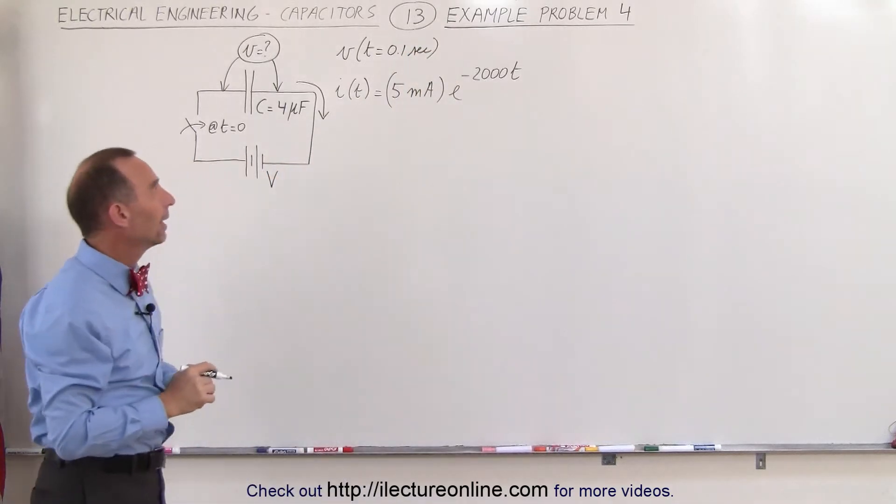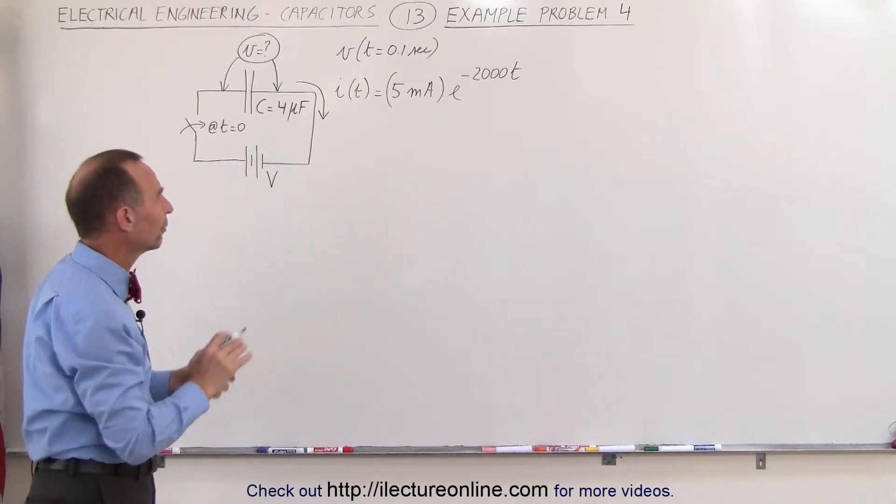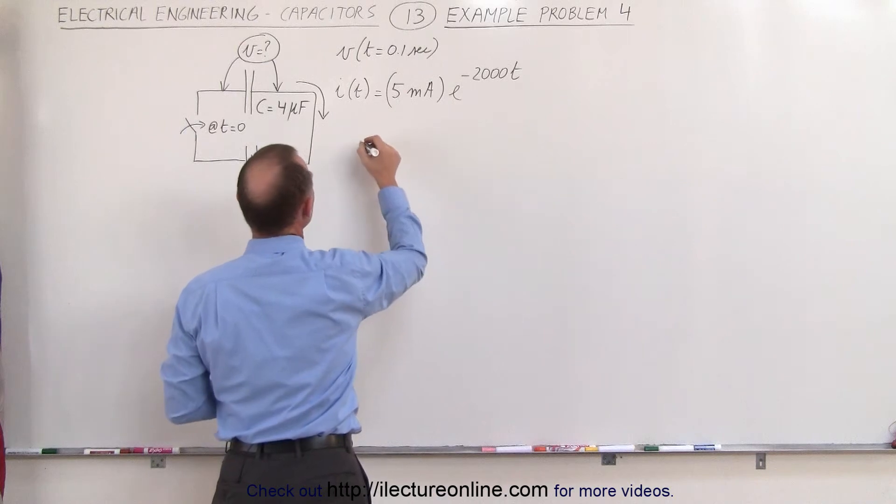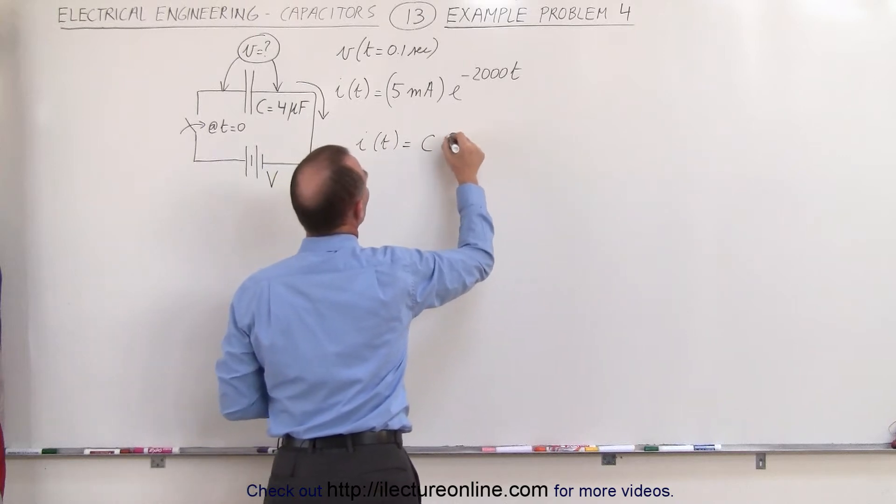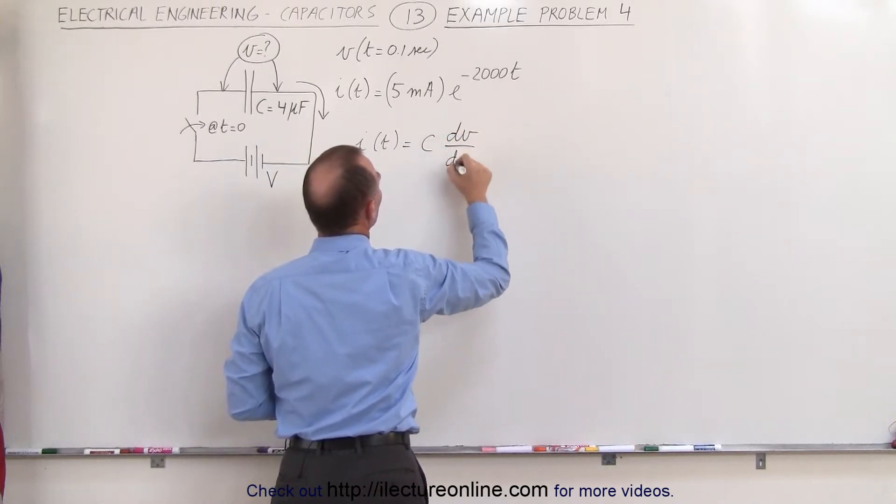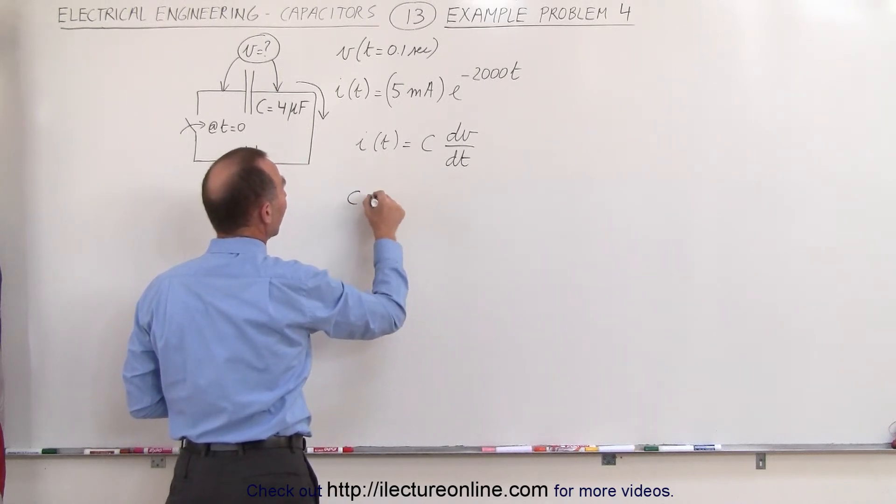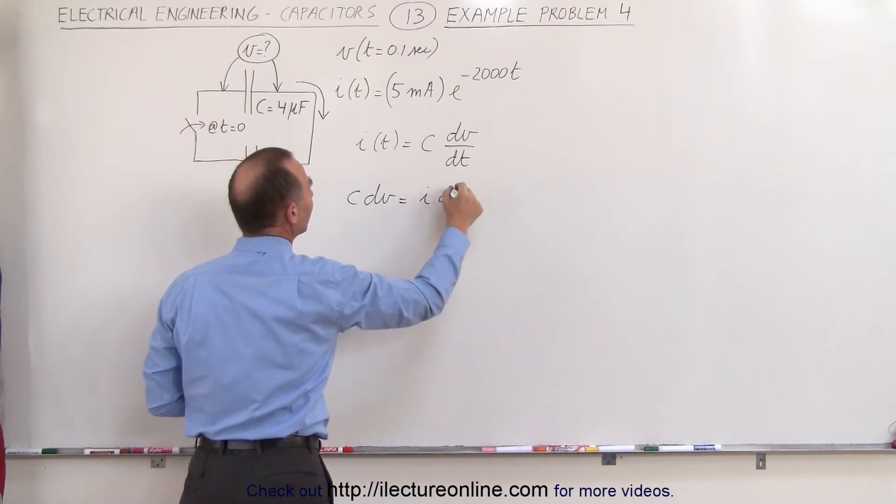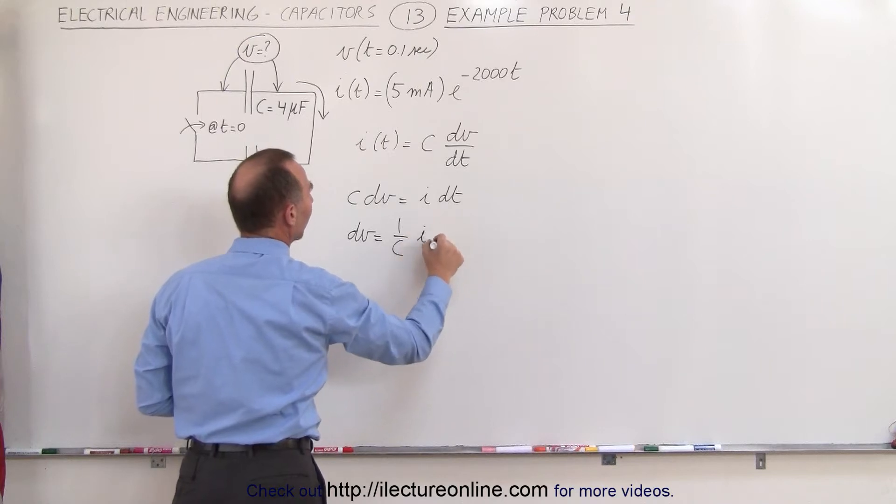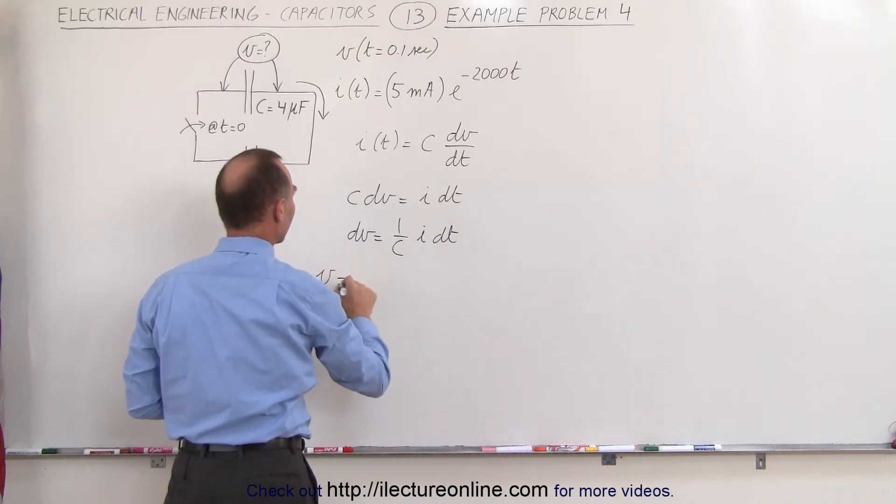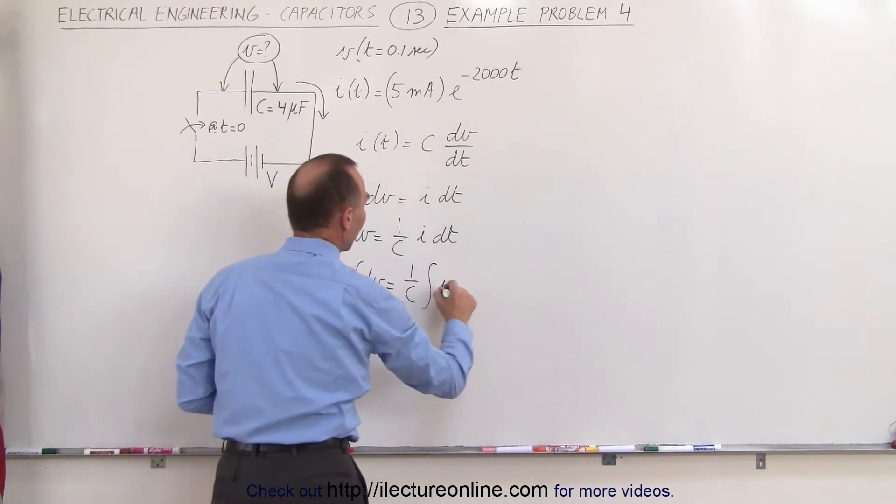All right let's go ahead and do that. First of all we need to find a relationship between the current and the voltage and we know that the current i as a function of time is equal to the capacitance times the rate of change of the voltage with respect to time. If you want to solve for the voltage we can say that c times dv is equal to i times dt, or dv is equal to 1 over the capacitance times the current times dt, or the voltage is equal to the integral of the dv which is equal to 1 over c times the integral of i times dt.